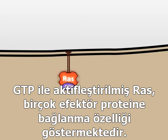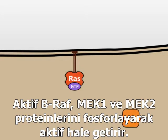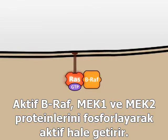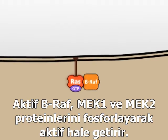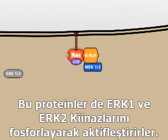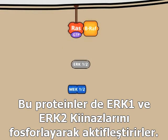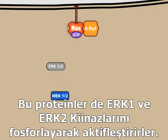In its active GTP-bound state, RAS is able to bind to several effector proteins. The kinase BRAF is one of the most important effectors of RAS. Active BRAF phosphorylates and activates the kinases MEK1 and 2, which in turn phosphorylate and activate the kinases ERK1 and 2.